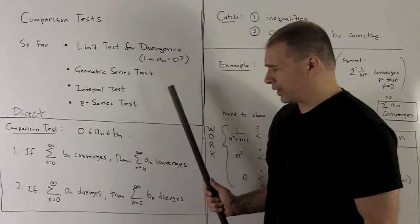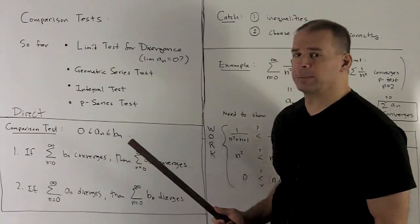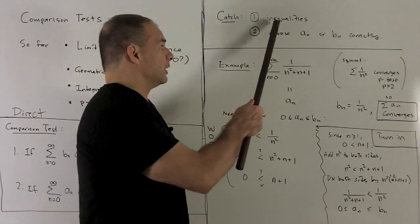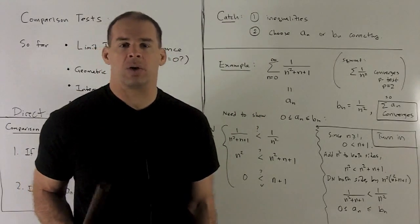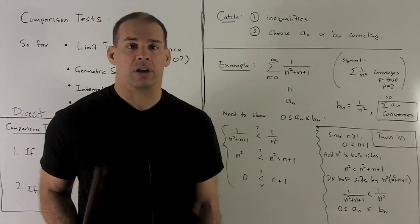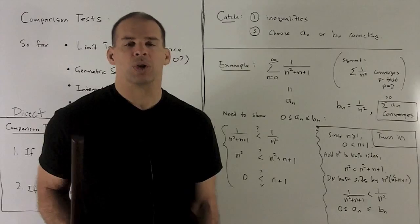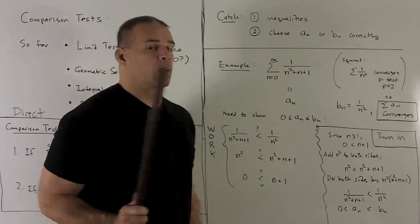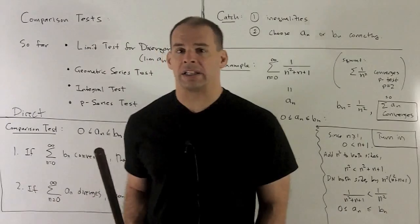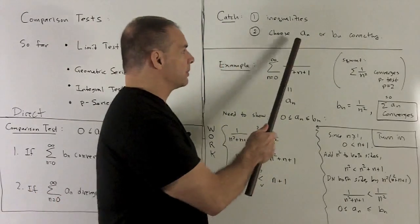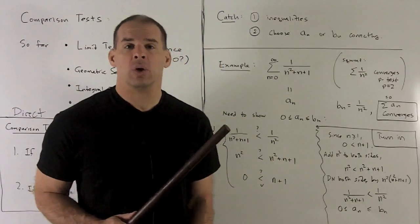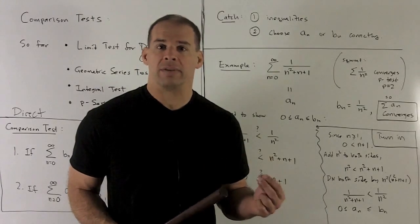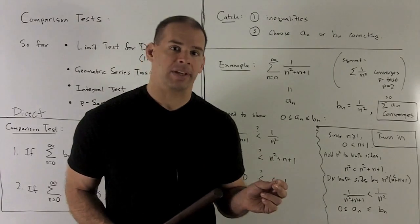A couple of catches occur when we try to use this test. One is that you need to deal with inequalities, and inequalities always make everyone feel a little uncomfortable — we'll try to clear that up. The other is that to use this test correctly, you have to choose your a_n or b_n right, or the test isn't going to work. You may need to root around for an answer which isn't so obvious.